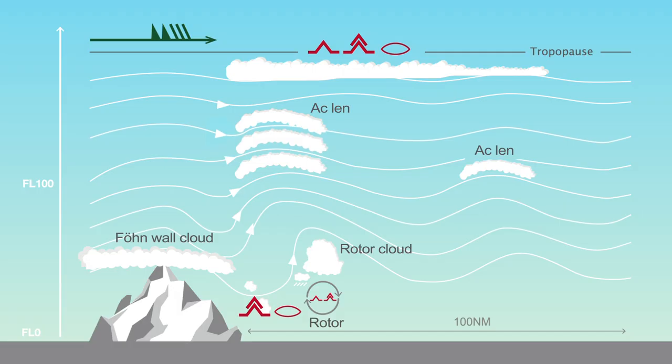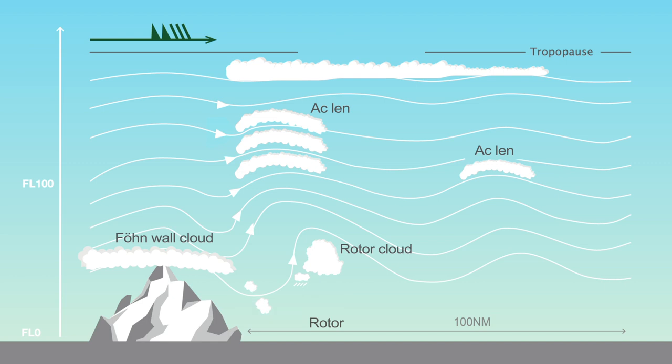Lenticular clouds are stationary clouds that can generally be found in the troposphere. They are easily recognizable as they take the shape of cuttlefish bones, flying saucers, or lenses — which is the origin of their name. They are evidence of a flow which has been modified up to hundreds of miles further downstream of mountainous terrain. This flow may lead to severe or extreme turbulence at the tropopause or near the ground.